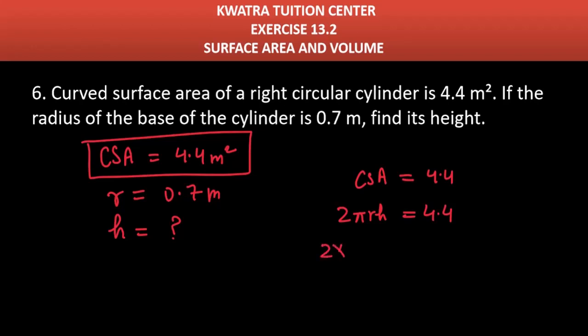And the value of 2 is 2, π will be 22 by 7, r will be 0.7, h is unknown for us, and on the other side we have 4.4. Now let's try to resolve this.